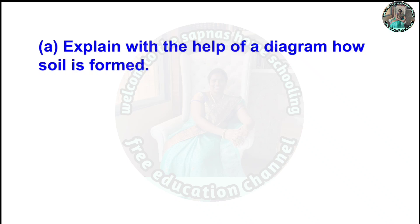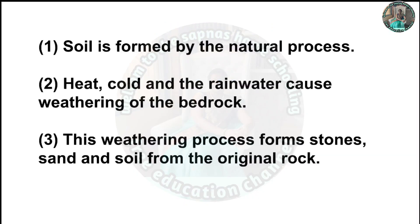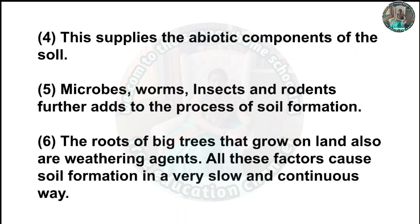Answer in your own words: A) Explain with the help of a diagram how soil is formed. Soil is formed by the natural process. Heat, cold and water cause weathering of the bedrock. This weathering process forms stones, sand and soil from the original rock. This supplies the abiotic components of the soil. Microbes, worms, insects and rodents further add to the process of soil formation. The roots of big trees that grow on land also act as weathering agents. All these factors cause soil formation in a very slow and continuous way.